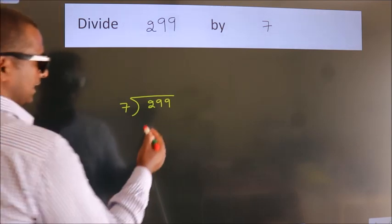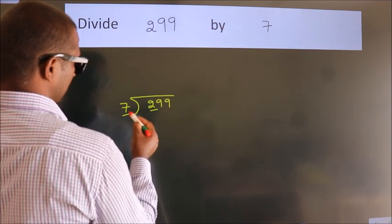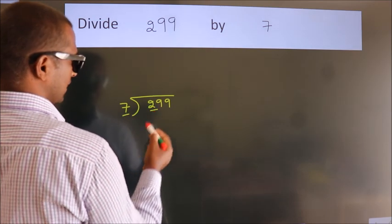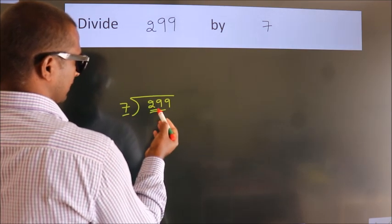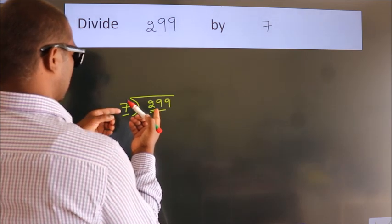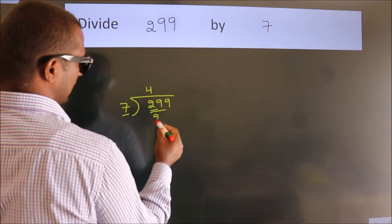Next. Here we have 2, here 7. 2 smaller than 7, so we should take 2 numbers: 29. A number close to 29 in 7 table is 7 fours 28.